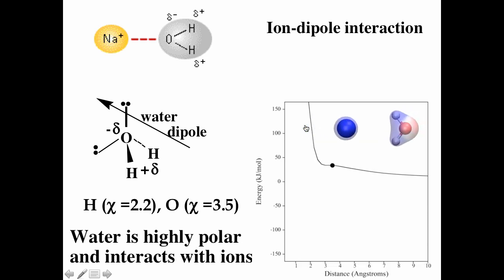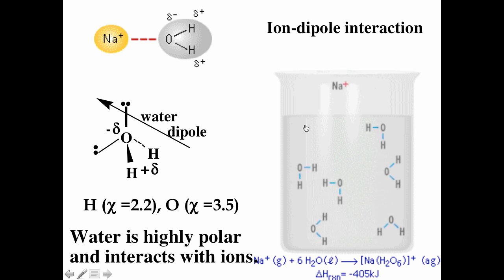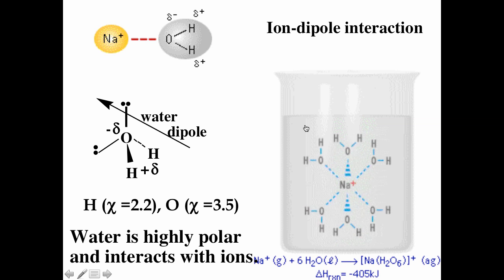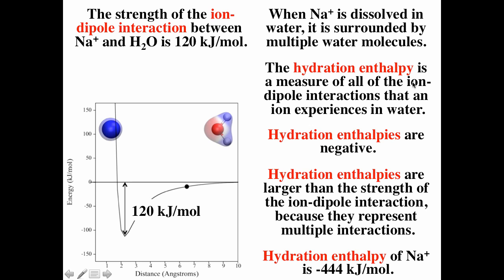When a gas-phase sodium ion enters water, it becomes surrounded by water molecules, or hydrated. The ion-water connection results from ion-dipole forces, indicated by a dotted line. It is difficult to determine the exact number of water molecules around a hydrated ion, but six is a good estimate for most cations. The hydration enthalpy is a measure of all the ion-dipole interactions that an ion experiences in water.